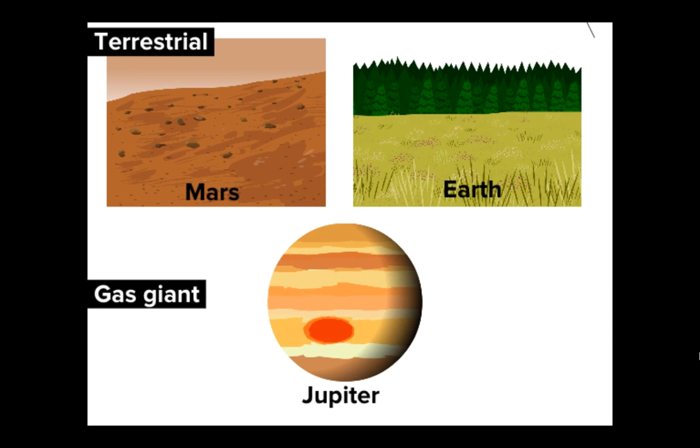Both Earth and Mars are terrestrial planets. That means that they're made of rock, and unlike gas giants like Jupiter, you can stand on their surface.